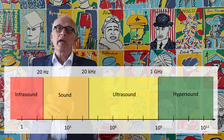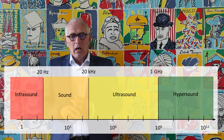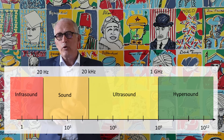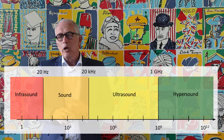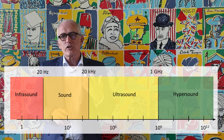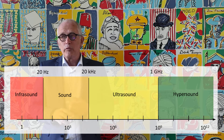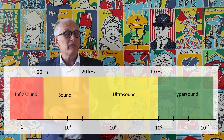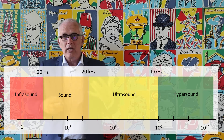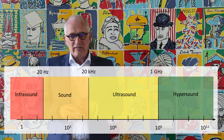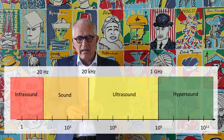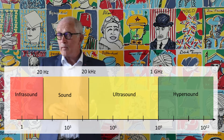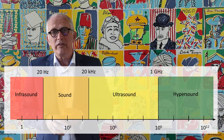Below the audible range, we have infrasounds, which are below 20 Hz. They are not completely inaudible to humans, but our hearing threshold is very high at those frequencies. Infrasounds need to be extremely intense to be perceived by our ears, but they are sometimes perceived by our entire body — our internal organs and cavities can start to resonate with infrasounds, so we are indeed sensitive to high-level infrasounds.